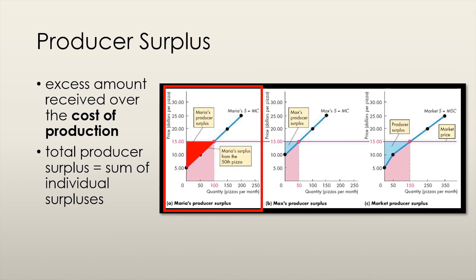If Maria produces at her optimal quantity, which is the quantity associated with a $15 price, she would be producing 100 units. To calculate her producer surplus, we would take the area above the supply curve and below the price. And again, this is a simple triangle, so we can use the half base times height formula to calculate the area.